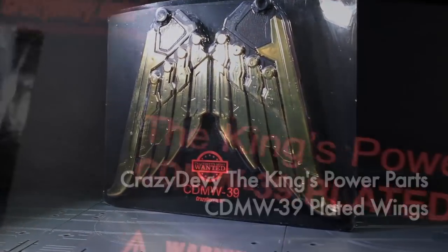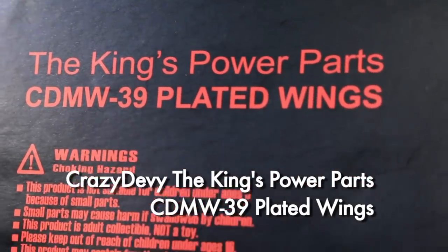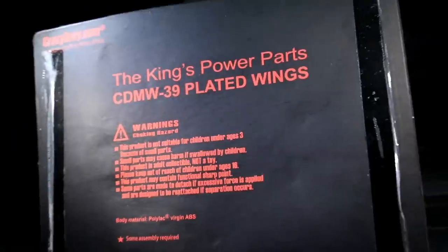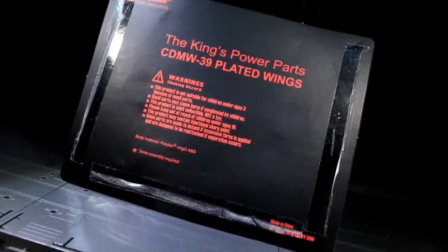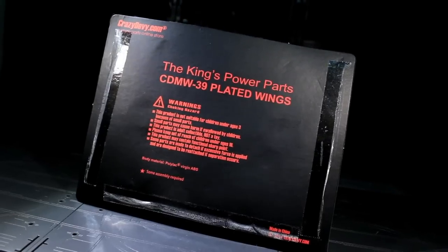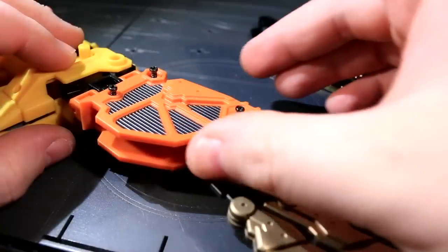These are the CDMW-39, the King's Power Parts Plated Wings. These are basically chrome-plated wings to replace the not-chrome-plated wings on Feral Rex, that being specifically the parts with the feathers on them.